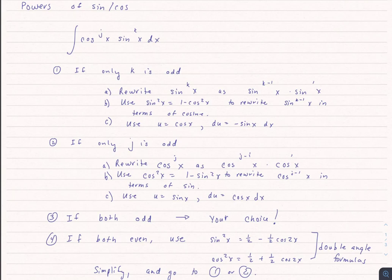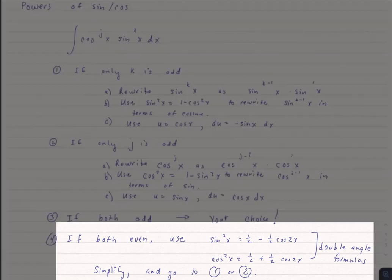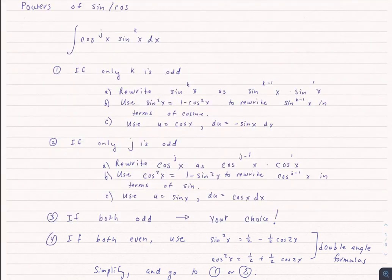The only tricky part is if they're both even, we're going to have to use the dreaded double angle formulas in order to put it in terms of an odd number. So you can either use sine squared x equaling one half minus one half cosine 2x or the cosine squared x equaling one half plus one half cosine 2x. Notice that brings a sine squared or cosine squared into just a cosine. So that brings our exponent down by one, which will make one of them odd. And then you're just going to go to step one or two.